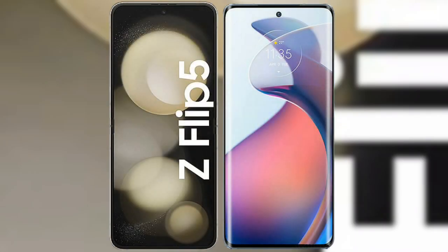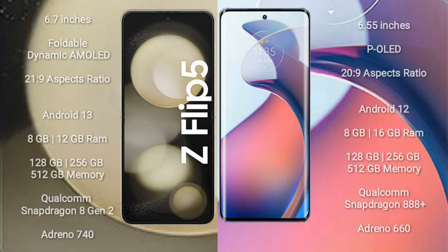I will compare the new Samsung Galaxy Z Flip 5 with the Motorola Moto S30 Pro. The Samsung Galaxy Z Flip 5 comes with a 6.7-inch foldable dynamic AMOLED display and aspect ratio 21.9. The Moto S30 Pro comes with a 6.55-inch P-OLED display and aspect ratio 23.9.